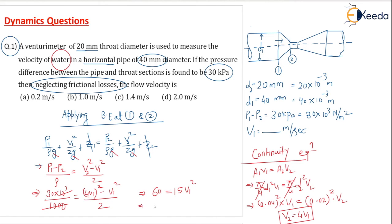Or V1² = 4. Therefore, the flow velocity V1 = 2 meters per second. That is the answer.